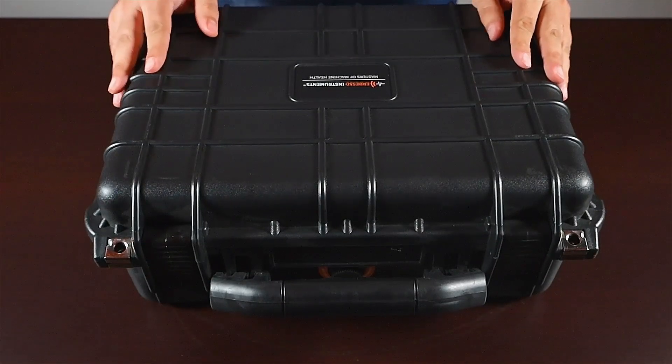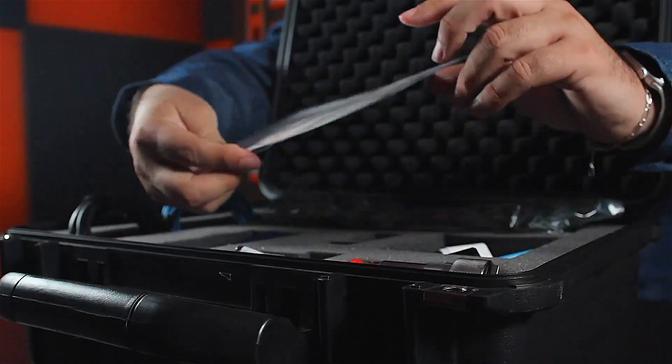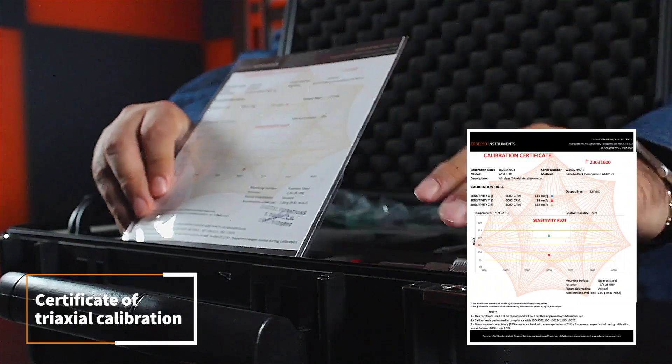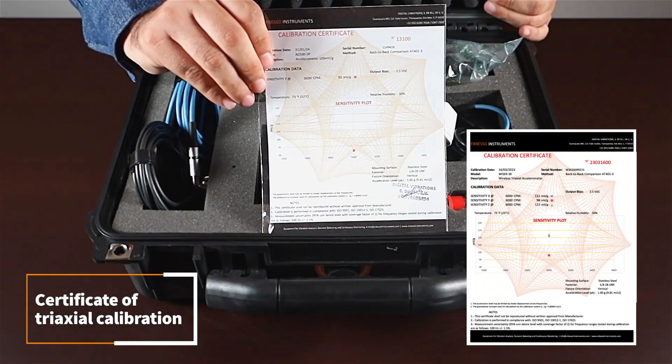Okay, now let's check the contents of our case. The first thing you're going to notice is your calibration certificate for your Wiser 3X. This certificate is unique for each device.